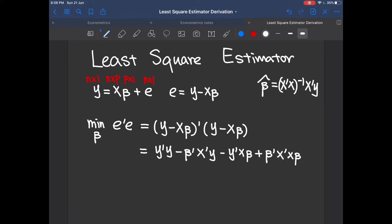Move on to the next step like how we approach a typical minimization problem. That is to differentiate the objective function which is e transpose e with respect to the variable which is beta here.